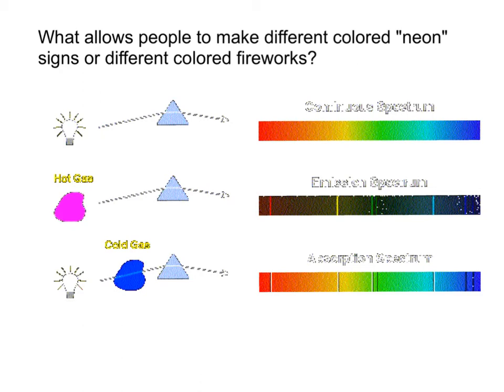So this graphic that we have here, and I think I would encourage you to take the time to copy it, and where the text is a little foggy, we'll annotate over it so you can see. It starts with a question: What allows people to make different colored neon signs or different colored fireworks or anything that glows with a different brightly colored light?